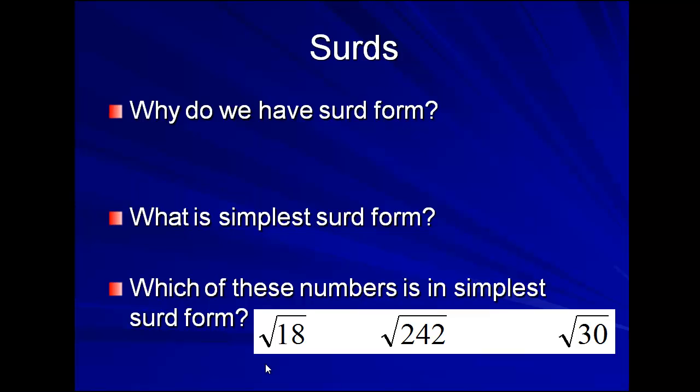We can split root 18 up into the square root of 9 times 2. And with surds, we are able to split the surd. So it goes from the square root of 9 times 2 to square root of 9 times square root of 2. We all know the square root of 9 is 3, so we end up with 3 root 2. So there's an example of simplest surd form.